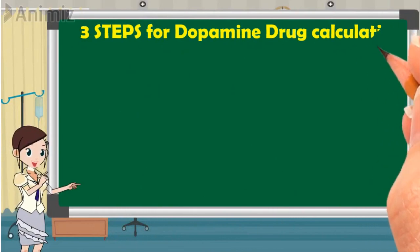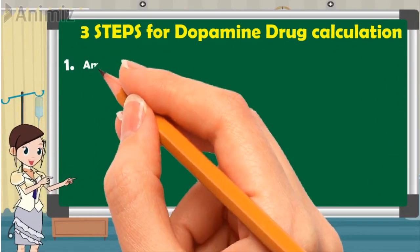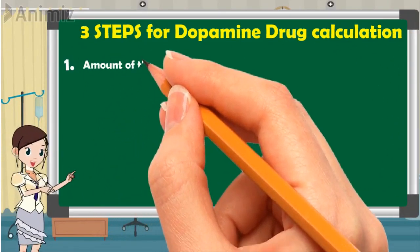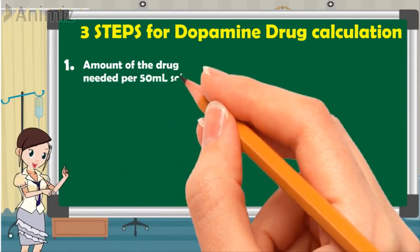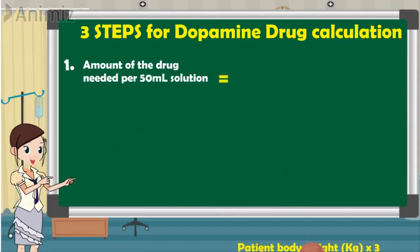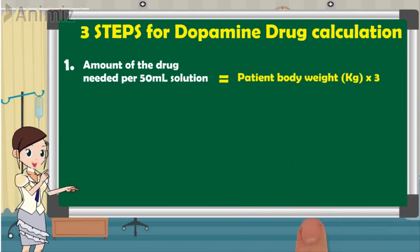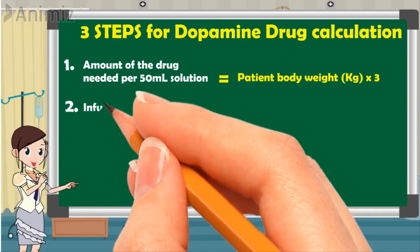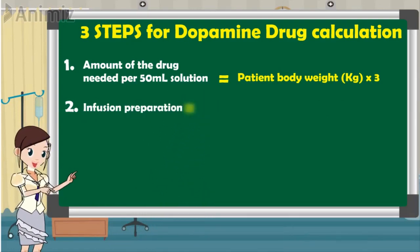There are three simple formulas or steps to calculate the dopamine drug dose and infusion rate. Step 1: the amount of drug needed per 50 milliliters solution equals patient body weight in kg multiplied by 3. Step 2: infusion preparation equals the needed dose in milligrams multiplied by the available volume in ml, divided by the available dose in milligrams.